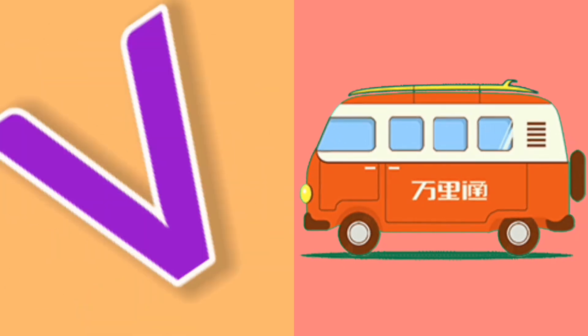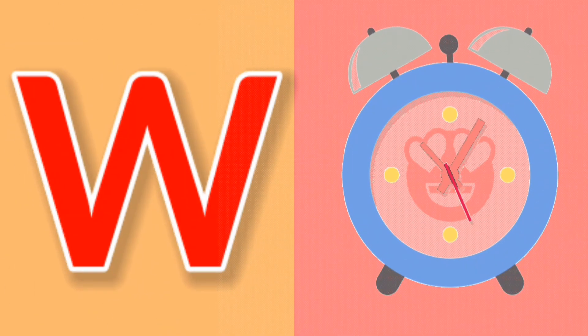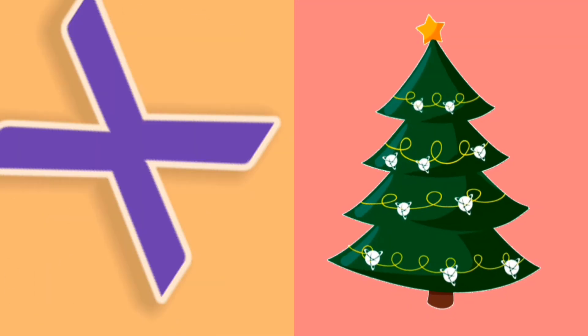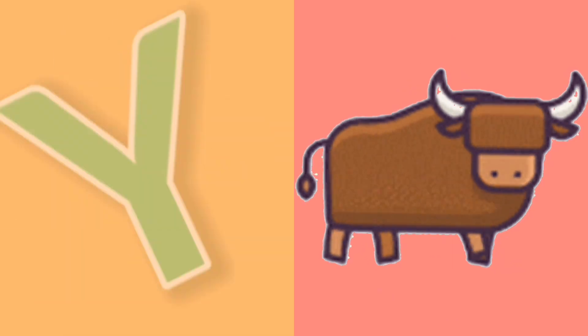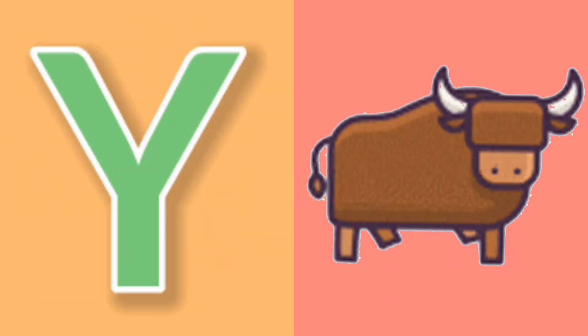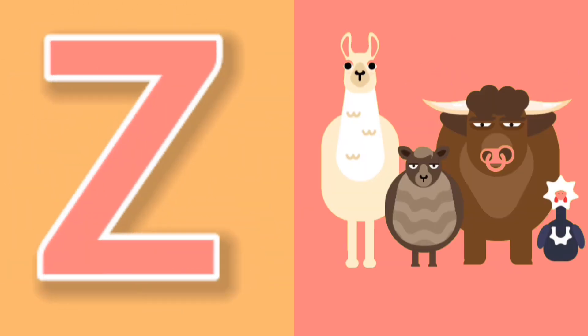U for umbrella, V for van, W for watch, X for Xmas, Y for yak, Z for zoo.